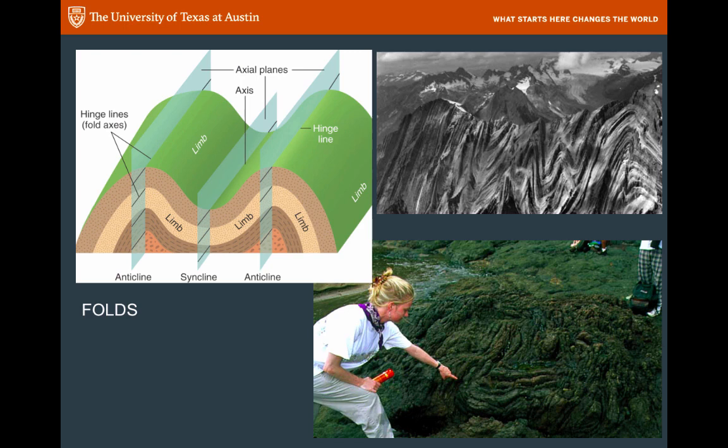We can measure the orientation of a hinge line too, and we call that orientation trend and plunge. It's the same idea — the compass direction and then the tip of it on a line or on a plane. That information can tell us a lot about the strength of the deformation, the strength of the force that caused that fold to form.